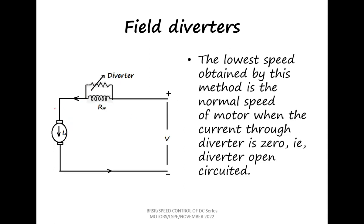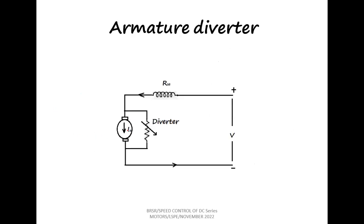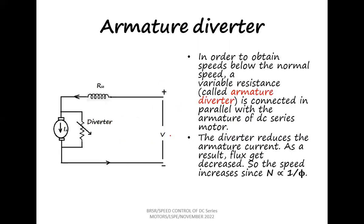The second method is the armature diverter, which is similar to the field diverter but the diverter is placed across the armature instead of across the field. In this case, the flux is not going to change — only the current through the armature changes. The net current flowing through the armature is decided by the diverter resistance. Here also, the field current gets reduced because of the diverter, so the speed increases.